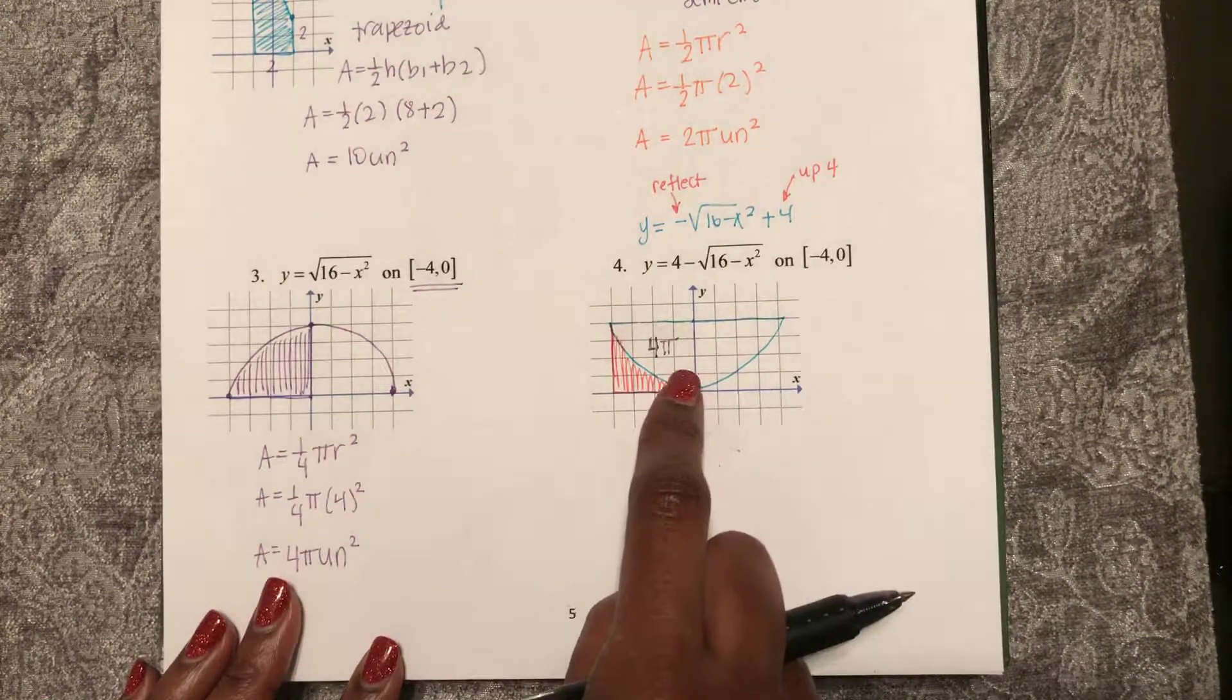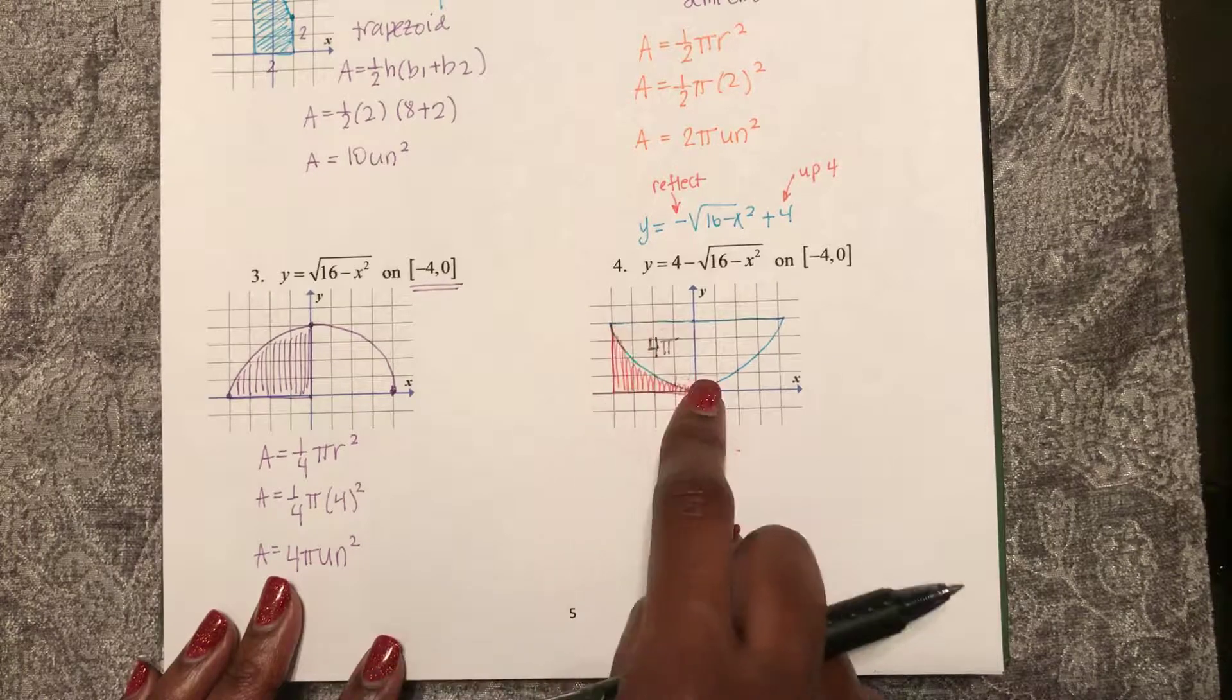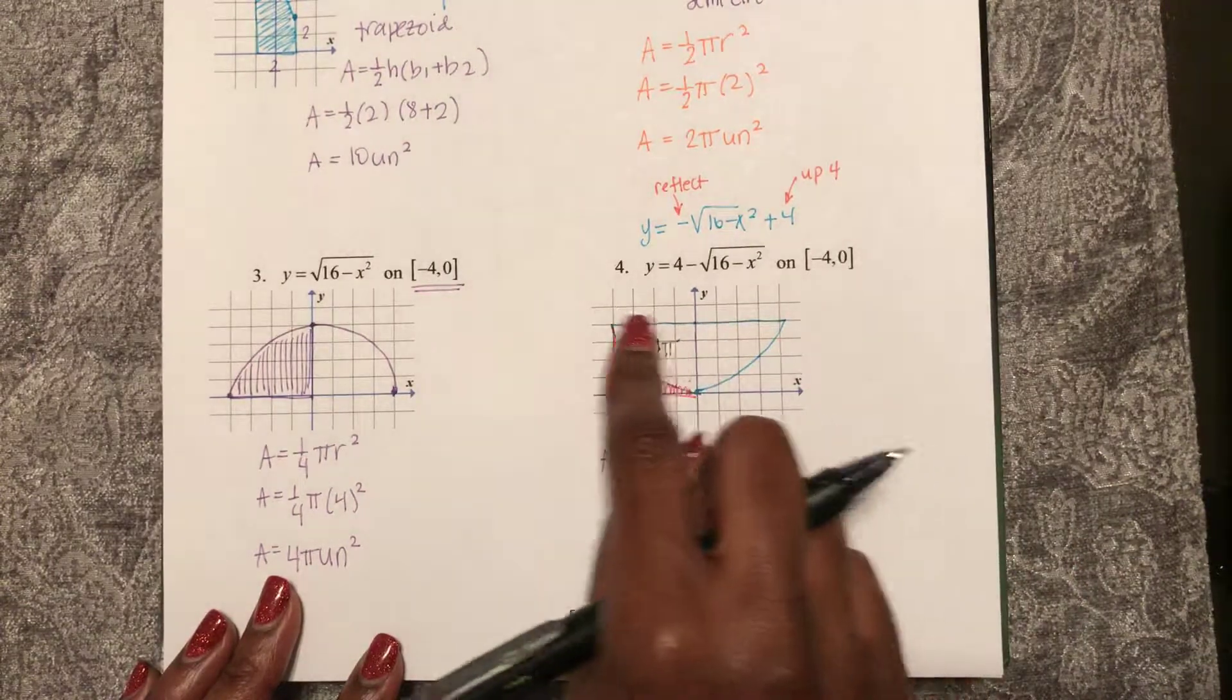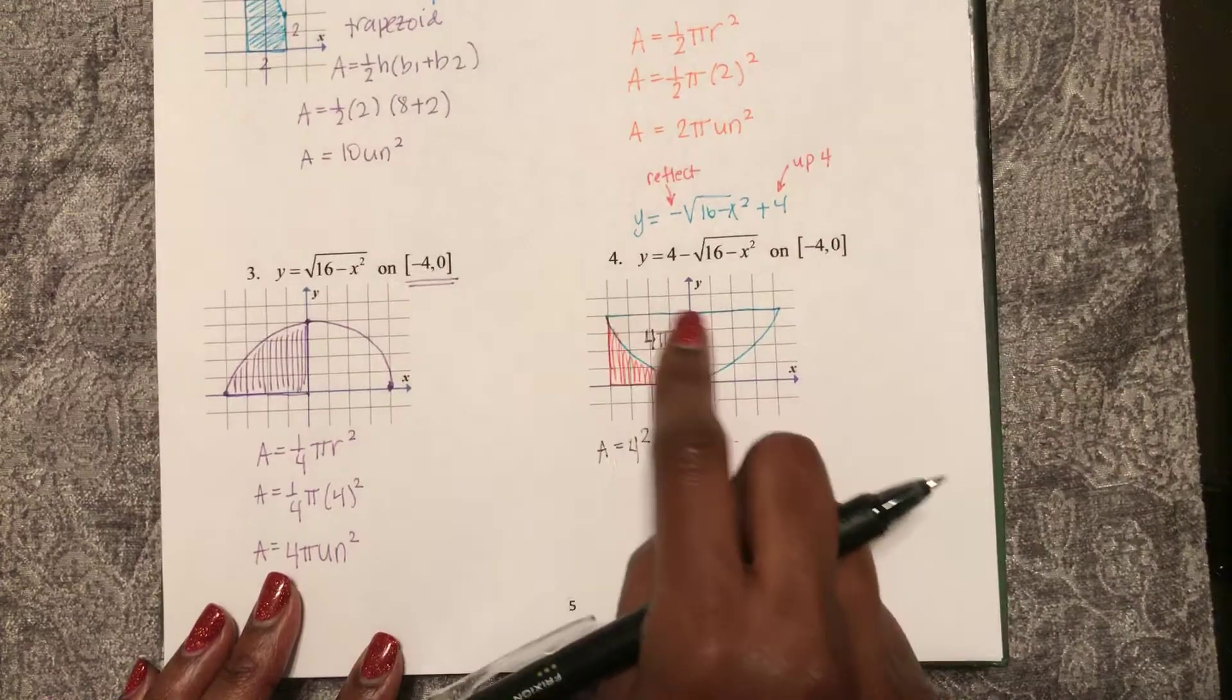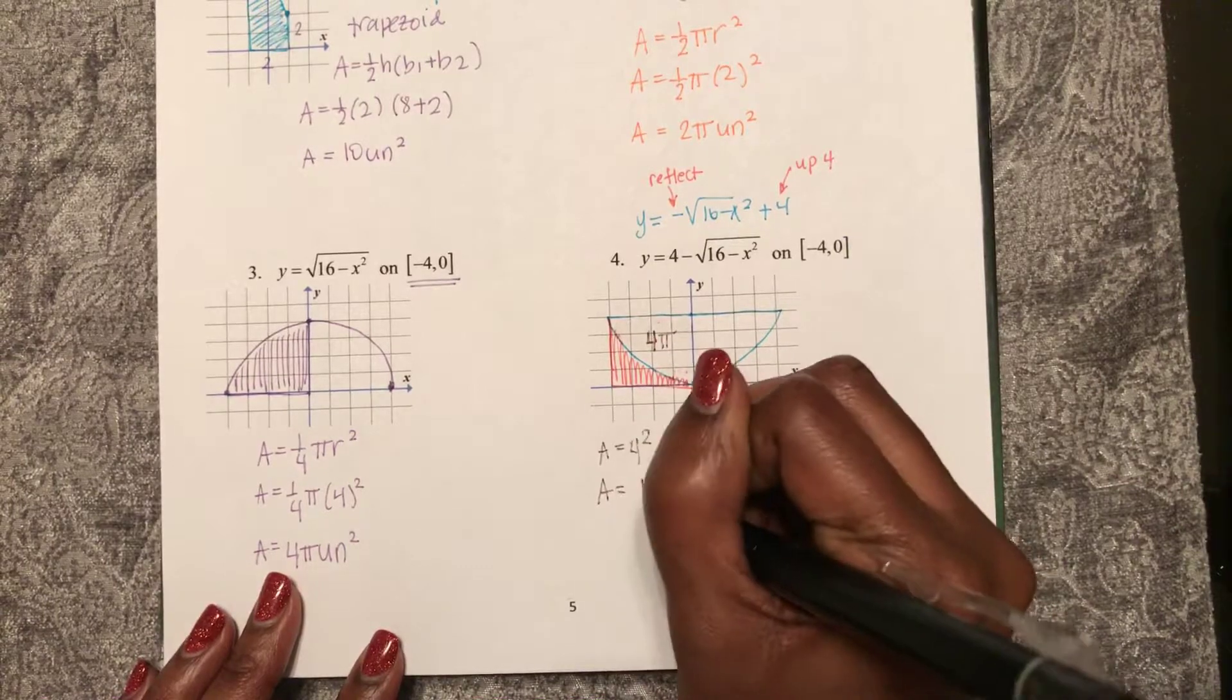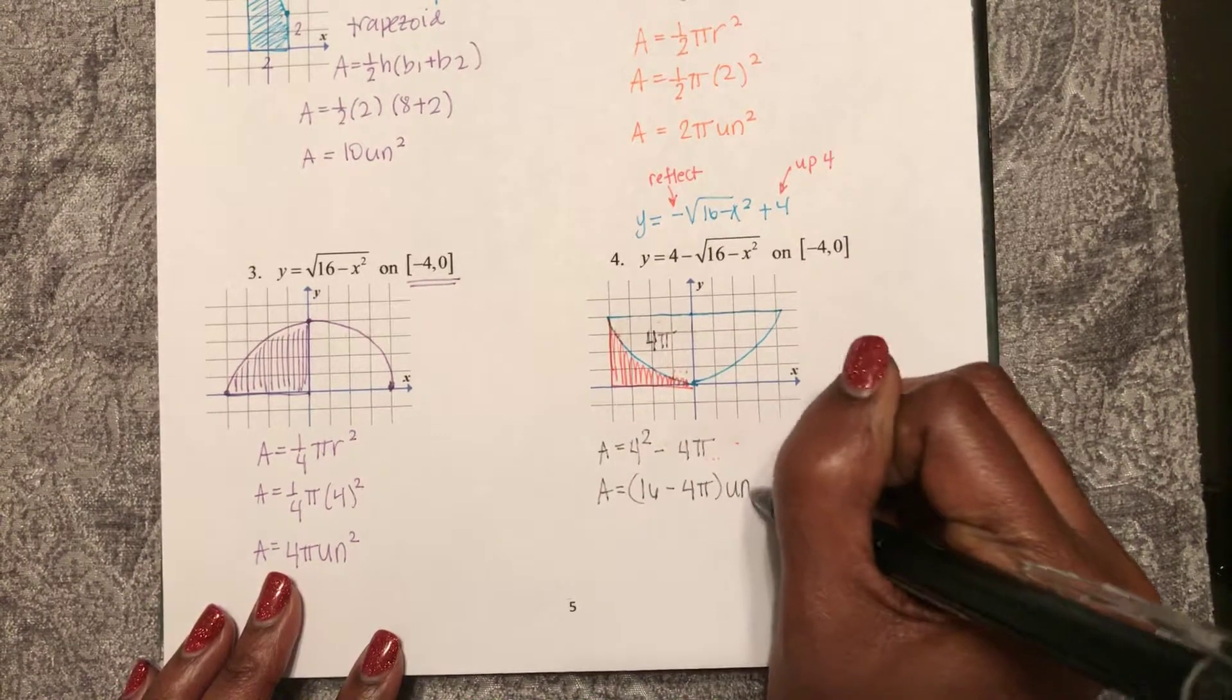But I can look at this shape here as being this square minus this little area. So the area is the area of the square, which is 4 squared, minus this quarter circle, which is 4 pi. So the area is 16 minus 4 pi unit squared.